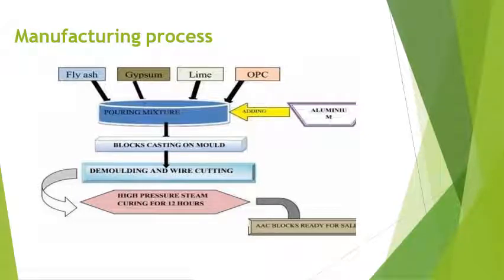Manufacturing process: The first step involves fly ash, gypsum, lime, and OPC poured into a mixture with aluminium powder added. Next is block casting in a mold, followed by demolding and wire cutting. The last stage is high-pressure steam curing for 12 hours, after which the AAC block is ready for sale.